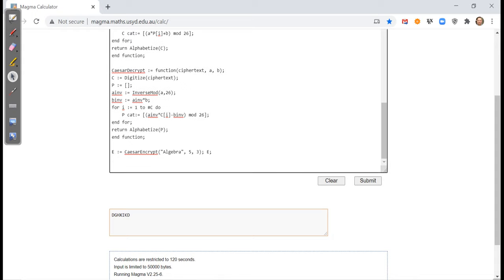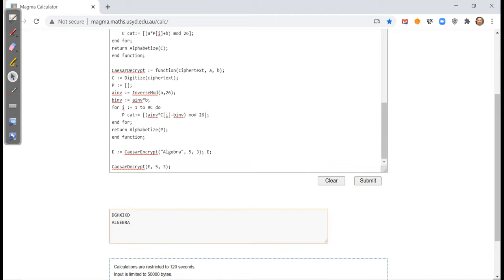And so if we want to decrypt it, then we're going to run Caesar decrypt. We plug in E, the message we have there, and we have to use the same key five and three. And so when we run that, it's going to give back the original message algebra, which admittedly it switched everything to uppercase, but that's something we definitely could live with.